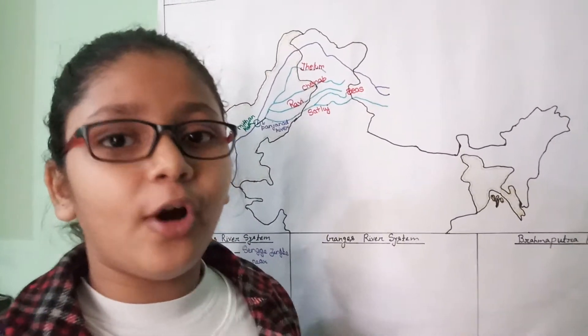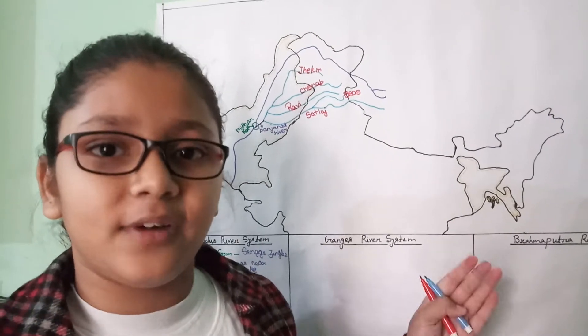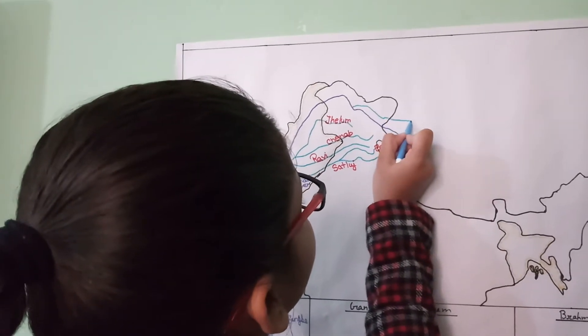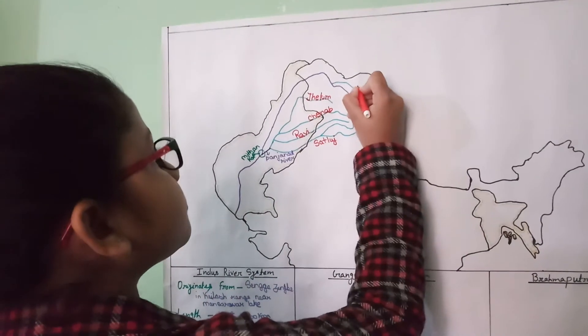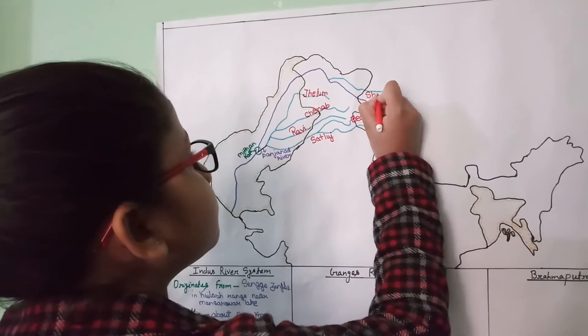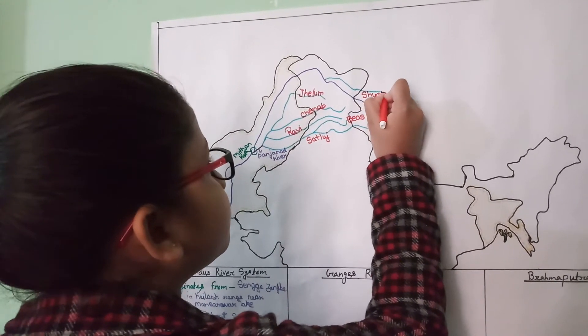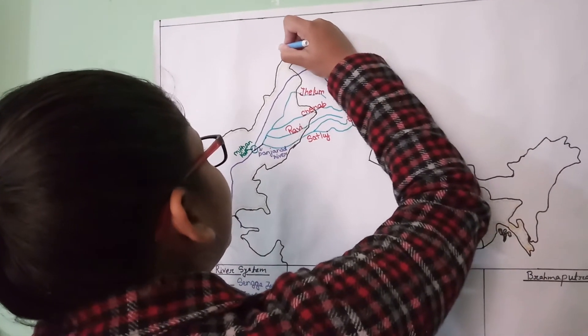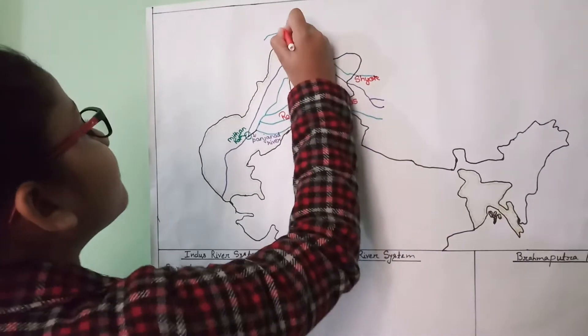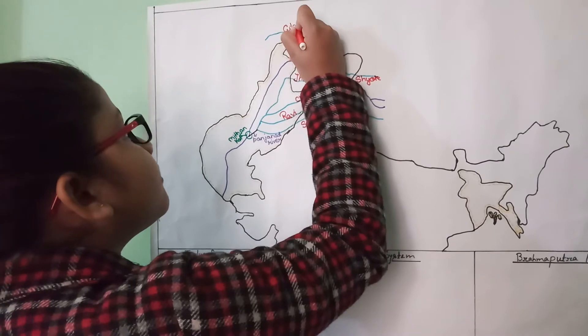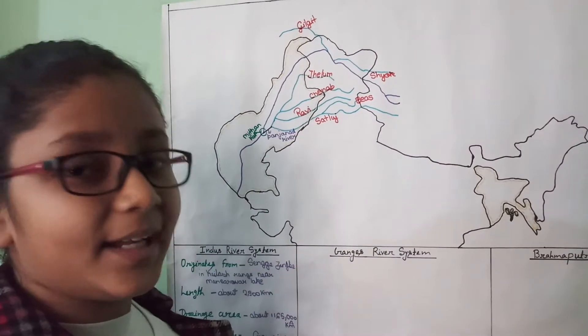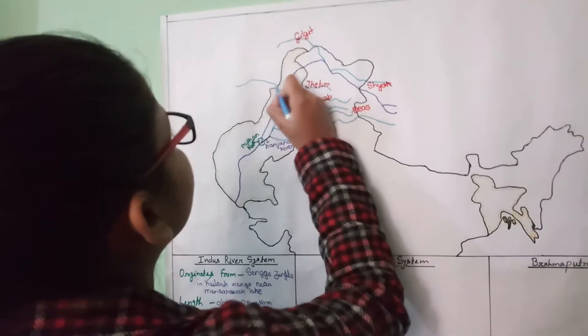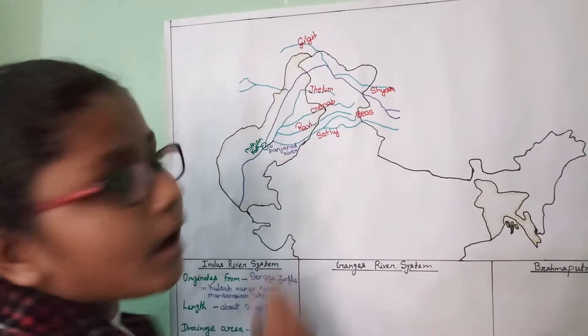So now we will move on to the right bank tributaries of the Indus River. So first, this is Shyok, and this is Gilgit. Then this is Kabul.